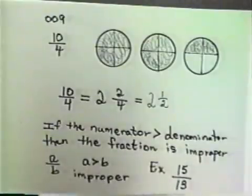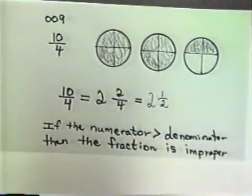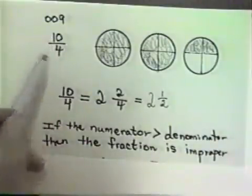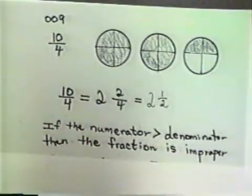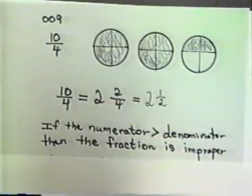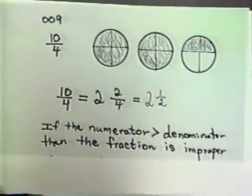Now, in this case, the numerator was bigger than the denominator. Ten is bigger than four. Any time the numerator is bigger than the denominator, our fraction is what we call an improper fraction. And you're going to always end up, when you have an improper fraction, with having more than one, needing more than one whole to draw a picture of it.